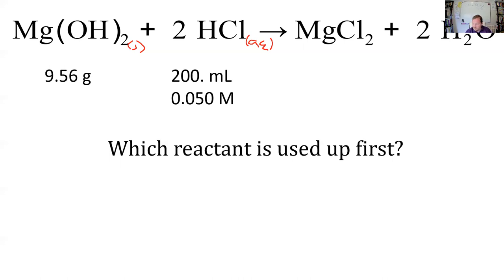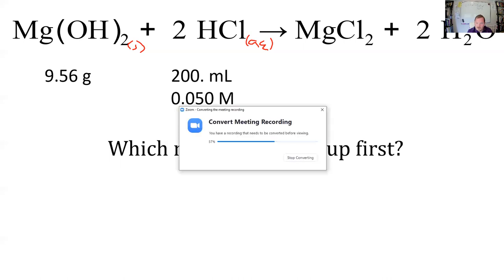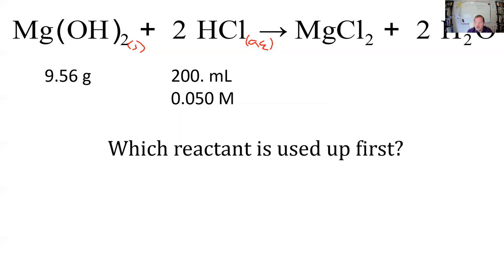To get to moles of magnesium hydroxide, that's going to be another case of using molecular weight. So 9.56 grams of magnesium hydroxide.